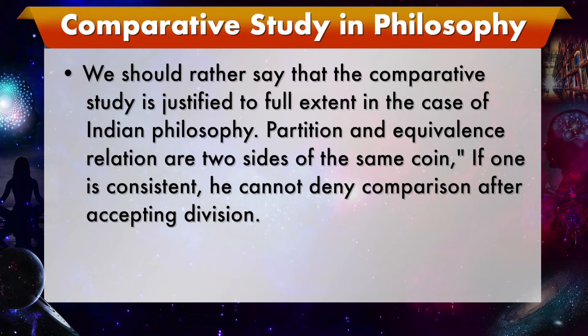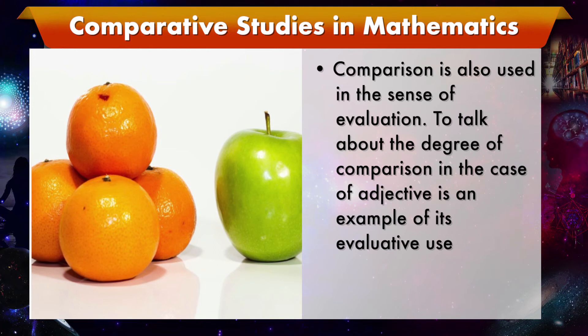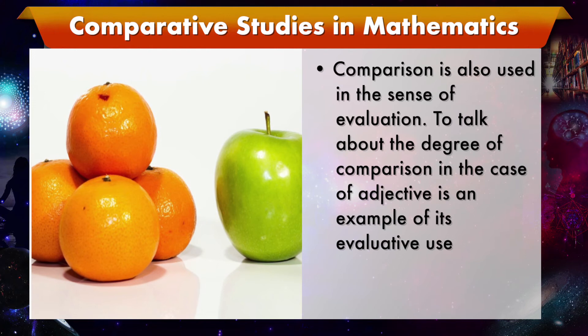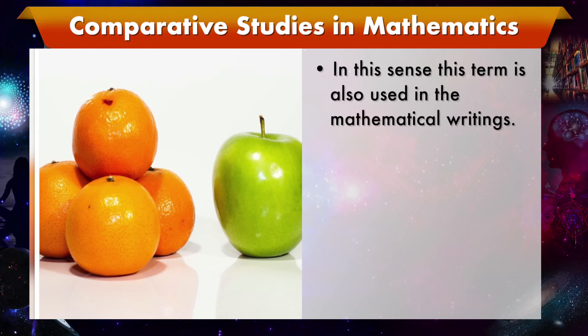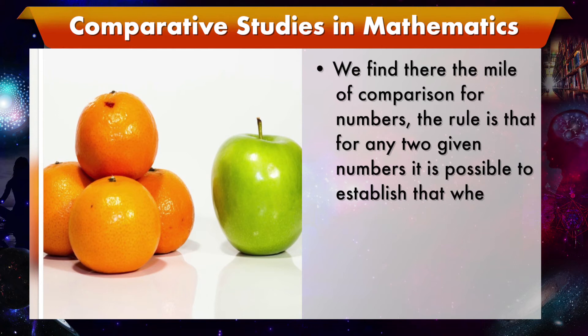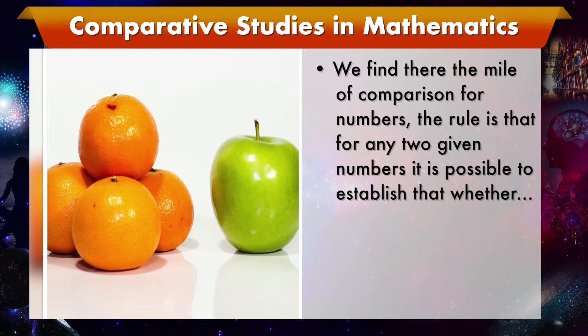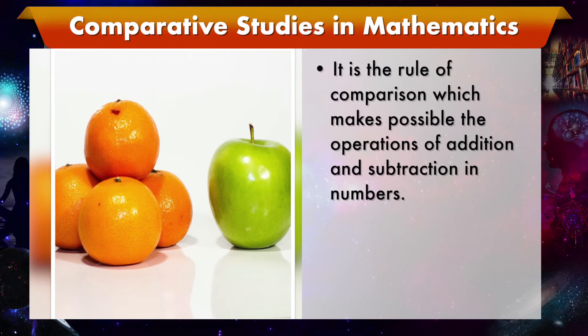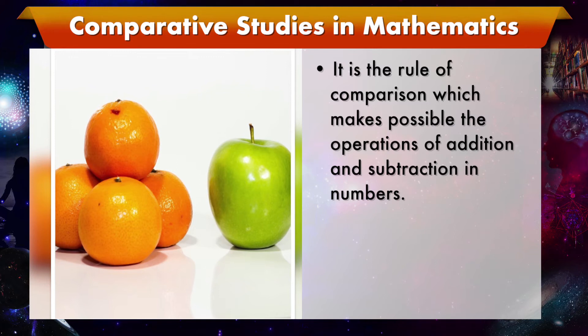Partition and equivalence relation are two sides of the same coin. If one is consistent, one cannot deny comparison after accepting division. Comparison is also used in the sense of evaluation — to talk about the degrees of comparison in the case of adjectives is an example of its evaluative use. In mathematics we find the rule of comparison for numbers: for any two given numbers it is possible to establish whether one is greater than, less than, or equal to the other. It is the rule of comparison which makes possible the operations of addition and subtraction in numbers.